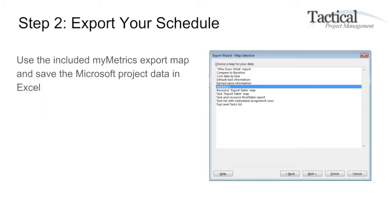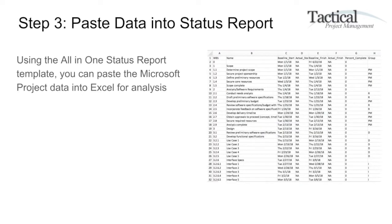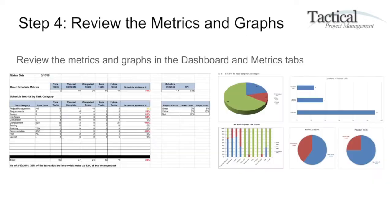The next step is simply to export your project schedule. You use the My Metrics export map that's included and save the Microsoft Project data into Excel. Then, using the all-in-one status report template, you paste the Microsoft Project data into Excel for analysis. Within seconds, you're able to review the metrics and graphs in the dashboards and metrics tabs.